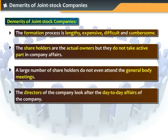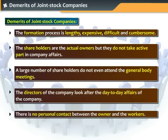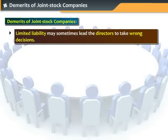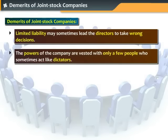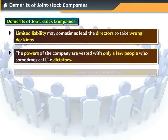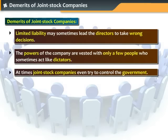The directors of the company look after the day-to-day affairs of the company, and there is no personal contact between the owner and the workers. Limited liability may sometimes lead the directors to take wrong decisions. The powers of the company are vested with only a few people who sometimes act like dictators. At times, joint stock companies even try to control the government.